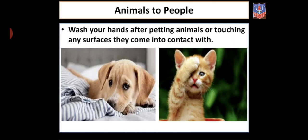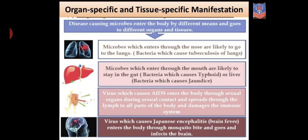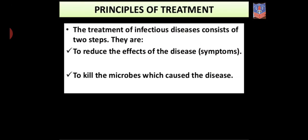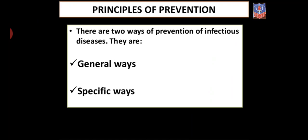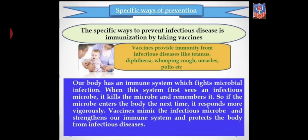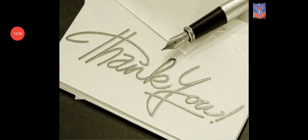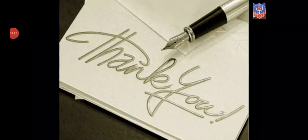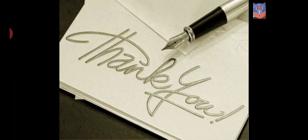There are many diseases which can spread from animals to people. So when you touch pet animals, you should wash your hands thoroughly. We have also seen organ-specific and tissue-specific diseases. To recap: principles of treatment — two steps; principles of prevention — general ways such as public hygiene, proper food, and reducing airborne and waterborne diseases, and specific ways such as vaccines like the polio vaccine. You should read this chapter thoroughly. Thank you, students.